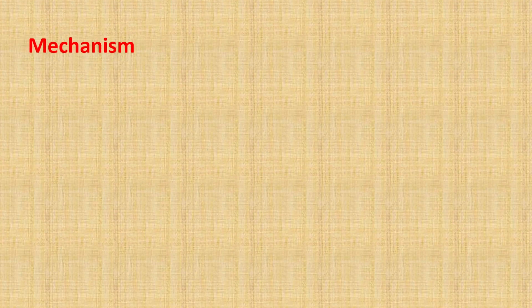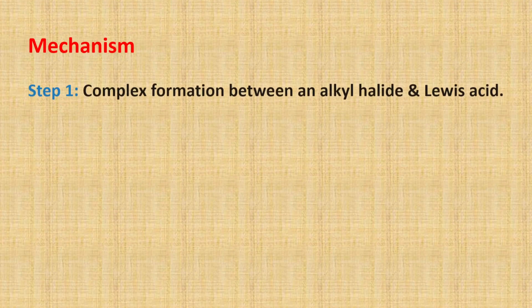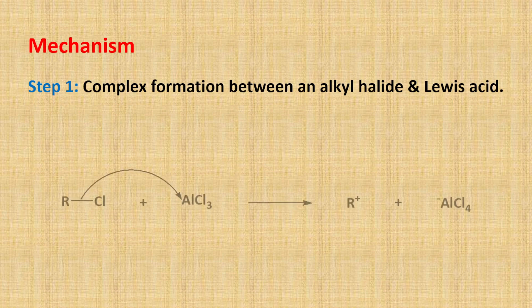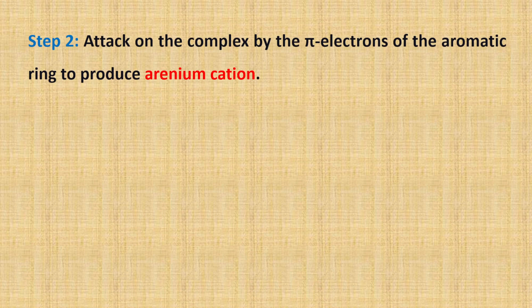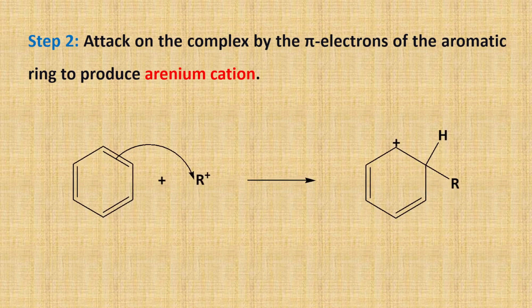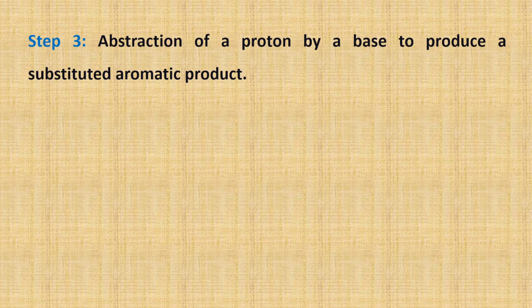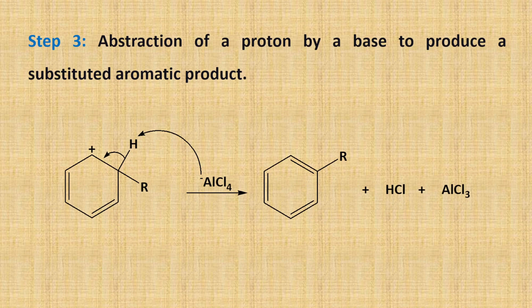The mechanism of Friedel-Crafts alkylation involves three steps. Step one: a complex is formed between an alkyl halide and Lewis acid, as you can see in the reaction equation. Step two: the complex is attacked by the pi electrons of the aromatic ring to produce a resonance-stabilized arenium cation. The positive charge delocalizes over the entire ring to make the stable arenium cation. Step three: a base abstracts a proton to yield the substituted product of the aromatic compound.